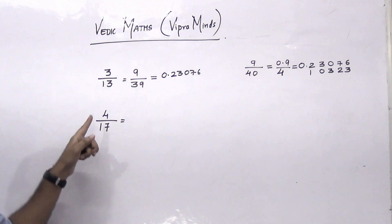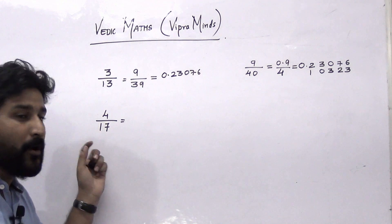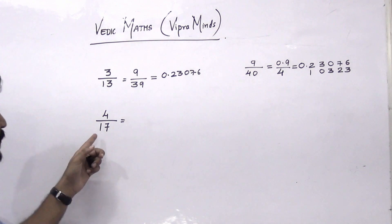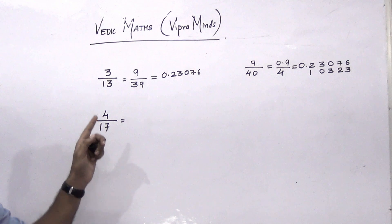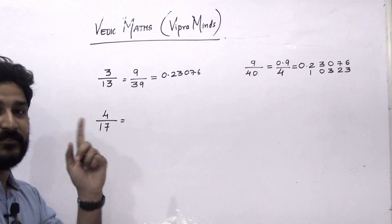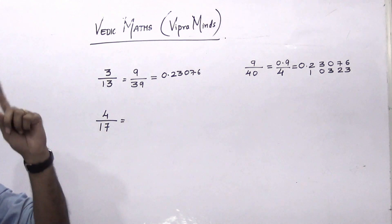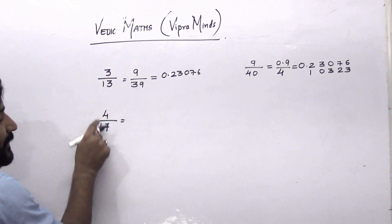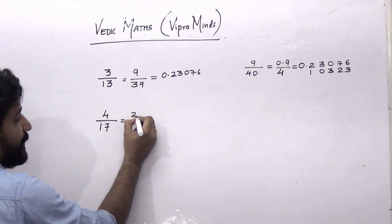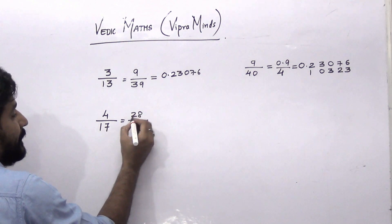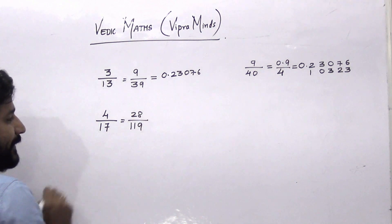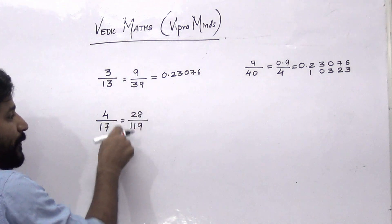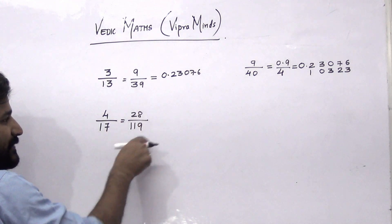Now the next example is 4 by 17. So again we are going to modify the divisor so that it will end with 9. We are going to multiply 17 by 7, because 7 into 7 is 49, so it will end with 9. So we multiply numerator and denominator by 7 — it will be 28 and 17 into 7 is 119. Both fractions are equal to each other, so we follow the same steps for this fraction.